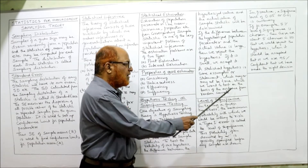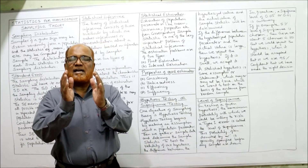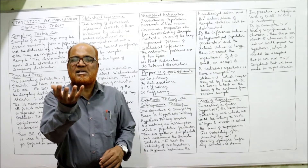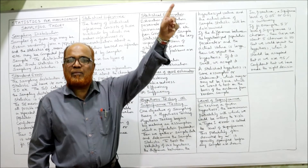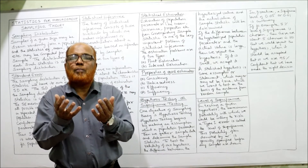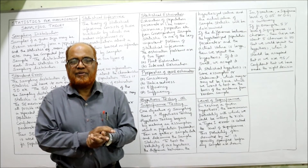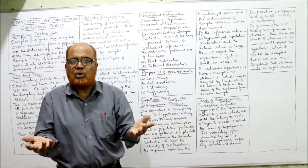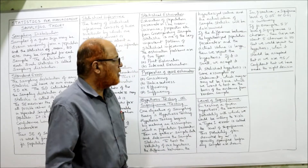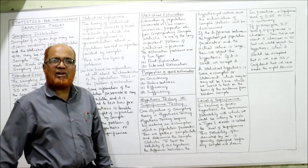A statistical hypothesis is some assumption or statement which may or may not be true, which we want to test on the basis of evidence provided by a random sample. It is some conclusion or assumption available about the population, and by taking a sample we want to prove whether that assumption is true or not — whether the assumption about the population parameter is correct. That is called statistical hypothesis.